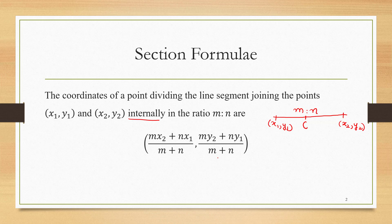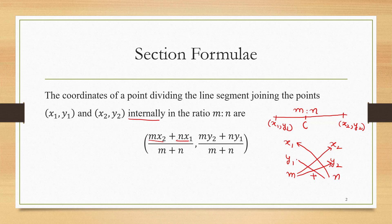This formula seems difficult to remember, so let's write it like this. We write them vertically: x1,y1 then x2,y2 and m,n. This formula is obtained by just cross multiplying. See: mx2 + nx1, divided by m+n. Similarly, my2 + ny1 divided by m+n. In this way it is easier to remember the formula.